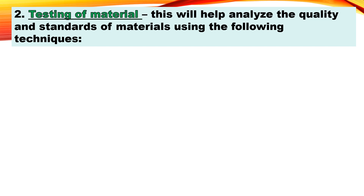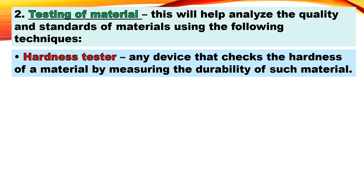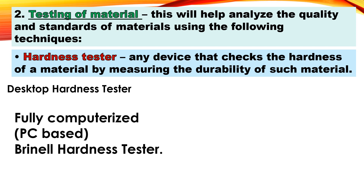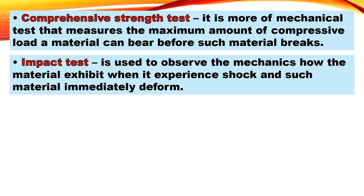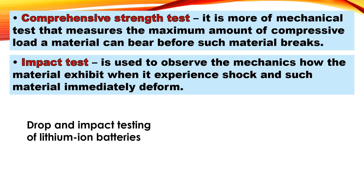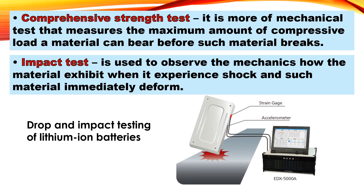Number two is the testing of material, which helps analyze the quality and standards of materials using the following techniques. First is the hardness tester — any device that checks the hardness of a material by measuring its durability. Shown here is the desktop hardness tester: a fully computerized, PC-based Brinell hardness tester. Next is the compressive strength test — a mechanical test that measures the maximum amount of compressive load a material can bear before it breaks. Then the impact test, used to observe how a material behaves when it experiences shock and immediately deforms. An example shown is drop and impact testing of lithium-ion batteries.